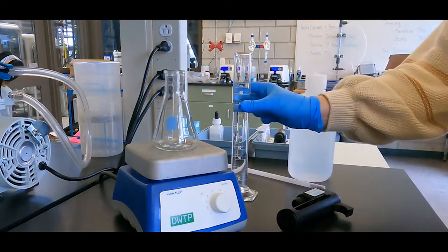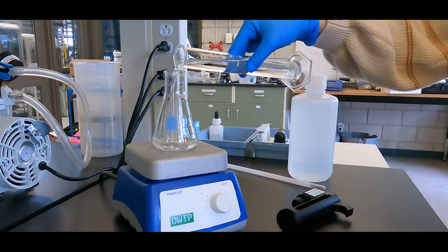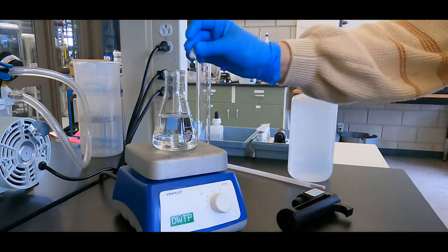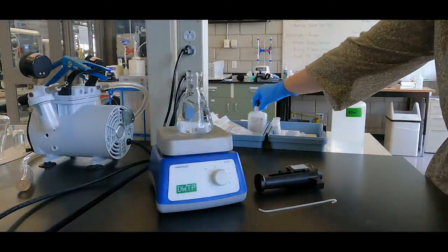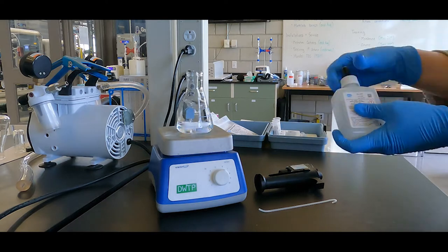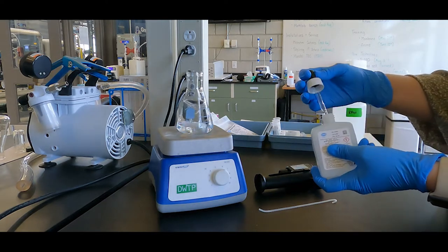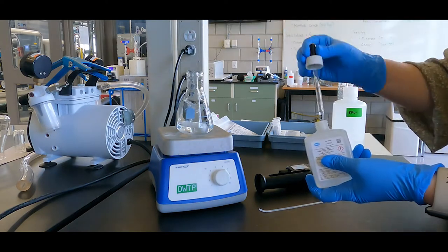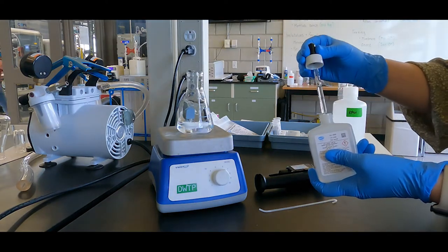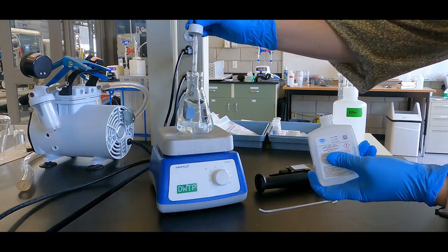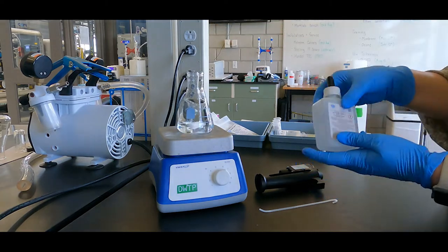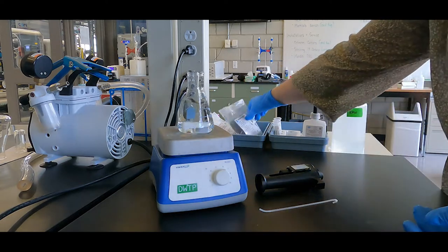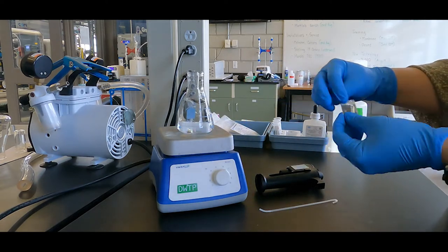Pour the sample into an Erlenmeyer flask and add a stir bar. Place on a stir plate and begin stirring the sample. Add 2 milliliters of Hardness 1 buffer solution to the sample. Next, add the contents of one Manver 2 Hardness Indicator Powder Pillow to the sample.